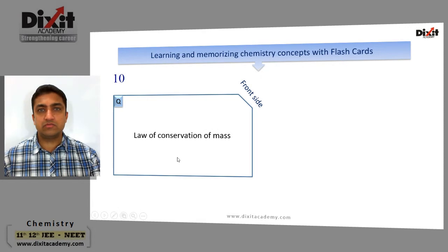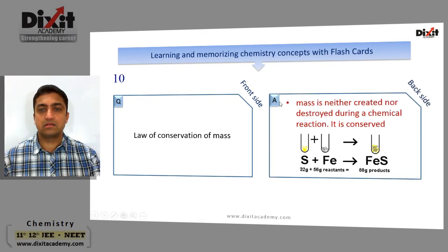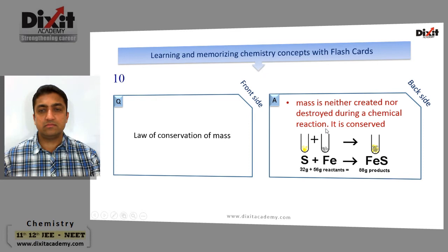Law of conservation of mass: mass is neither created nor destroyed during a chemical reaction — it is conserved. Example: 32 grams of sulfur combines with 56 grams of iron to produce 88 grams of ferrous sulfate.